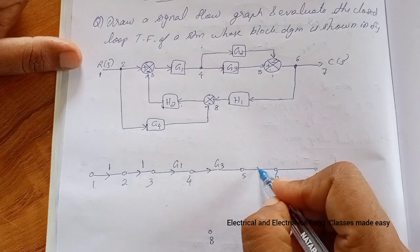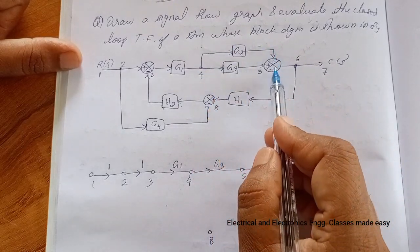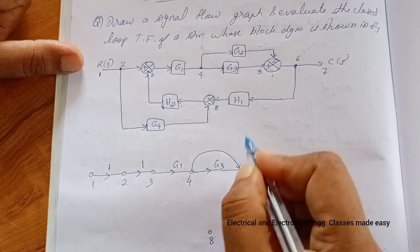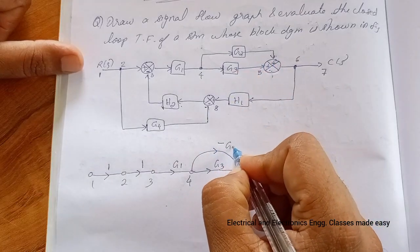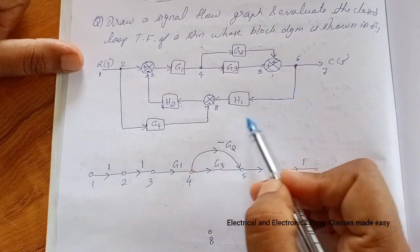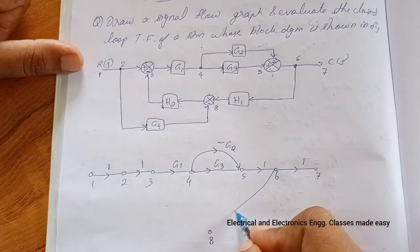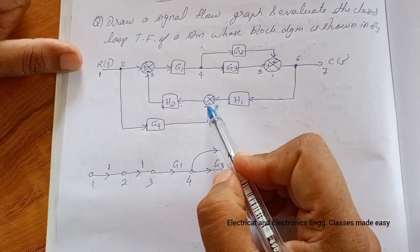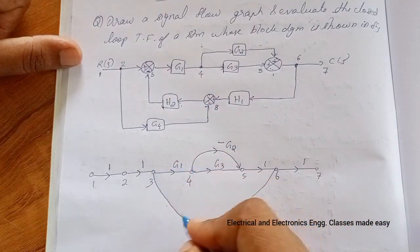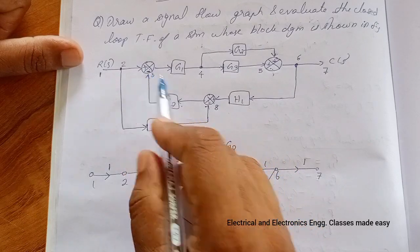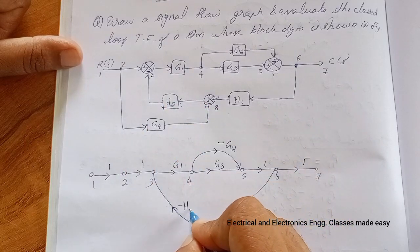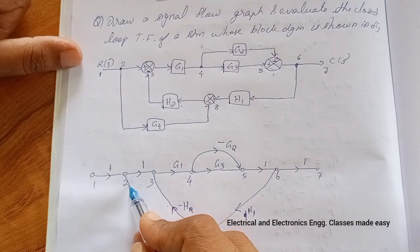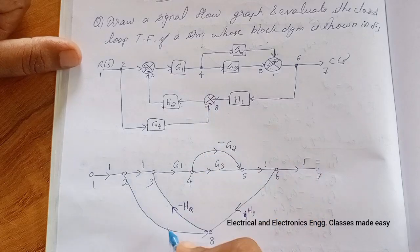From five to six the value is one, and six to seven is also one. There is a parallel branch from four to five, and since it is negative its value is minus G2. From six to eight the transmittance is H1. Then from eight to three it is minus H2, since that path is negative. From two to eight the value is minus G4.